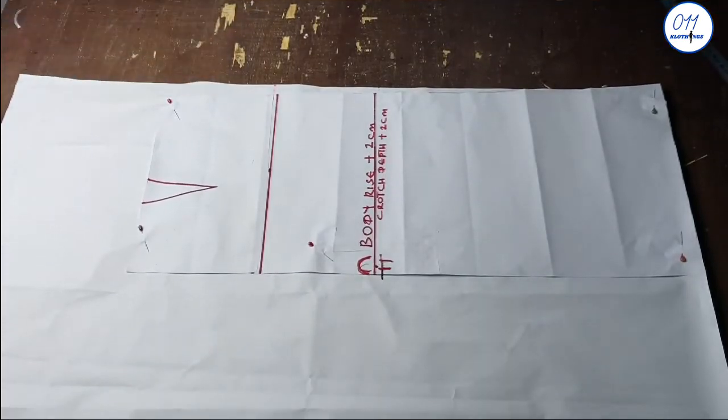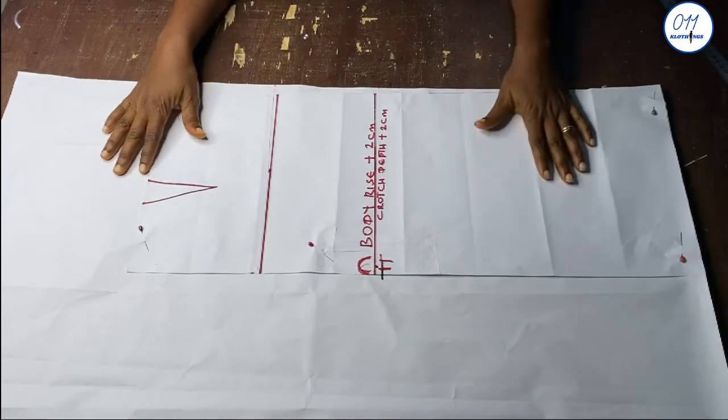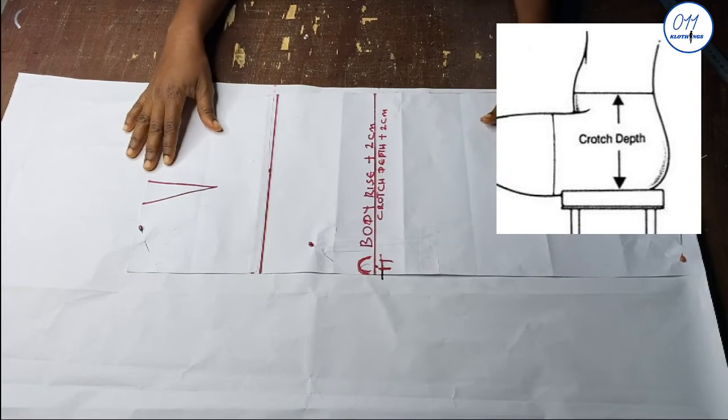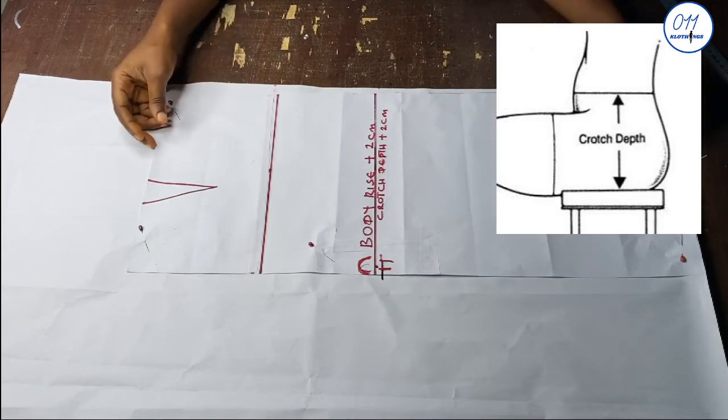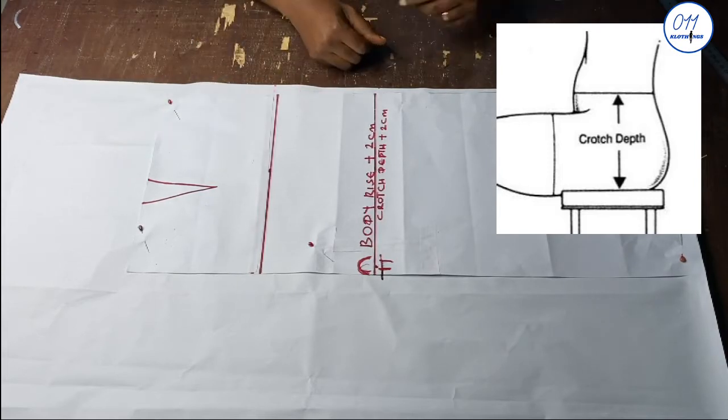So I have pinned the front pattern of the basic straight skirt on the fresh pattern paper. I have also drawn some lines on it. We will need the crotch depth measurement. To get the crotch depth measurement you have to sit down on a hard surface and measure from your waistline downwards.